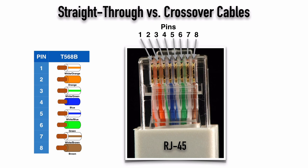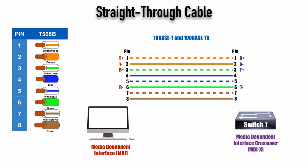In the previous video we took a look at a couple of EIA/TIA standards. We saw how we could wire up an RJ45 connector and we said that primarily we're going to be using the T568B standard. Here we see a reminder of how the pins are laid out in an RJ45 connector and what wires connect to which pins. Now let's consider a 10BaseT network or a 100BaseTX network and see how the data actually flows over these wires.